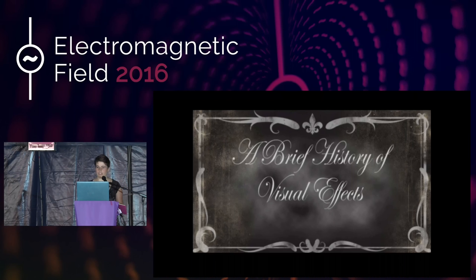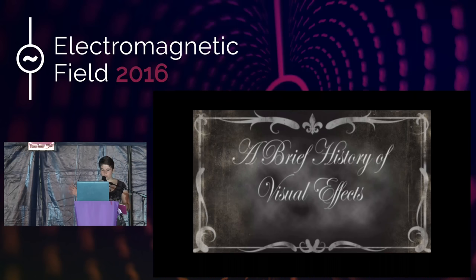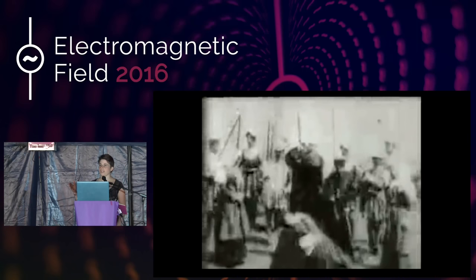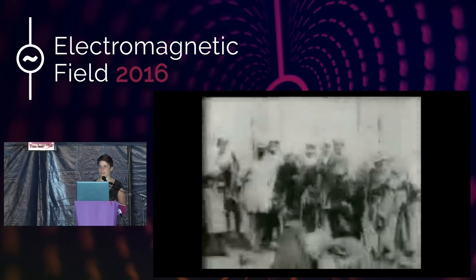We should probably start right at the beginning. This is the execution of Mary Queen of Scots, made in 1895. It's a substitution effect — basically you stop the camera while you're filming, replace something in the scene, and then start the camera again. It's a very basic sort of magic trick, made by Edison Labs in 1895.